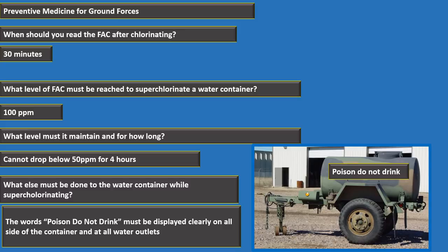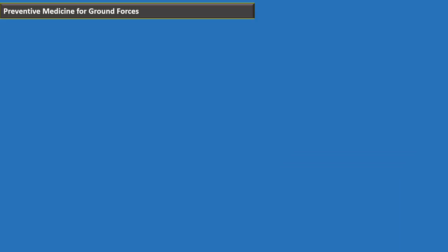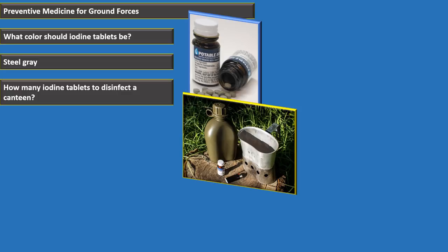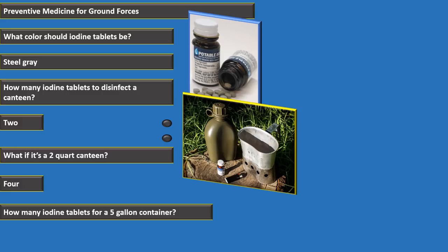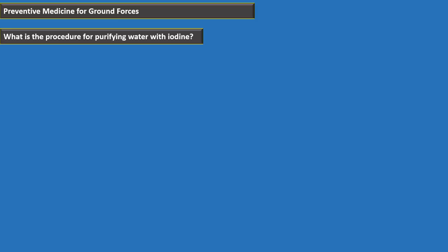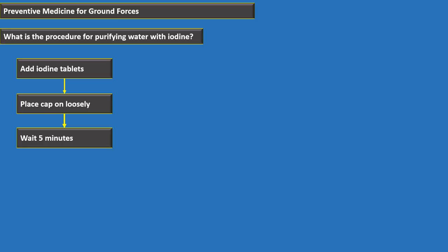Iodine tablets must be steel gray. Use two tablets for a standard canteen, four for a two-quart canteen, and 40 for a five-gallon container. Procedure: add iodine tablet, place cap loosely, wait five minutes, shake to allow leakage around the threads, tighten the cap, then wait 30 minutes before drinking.